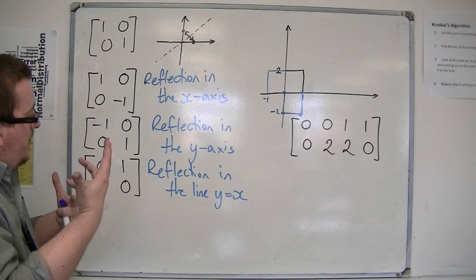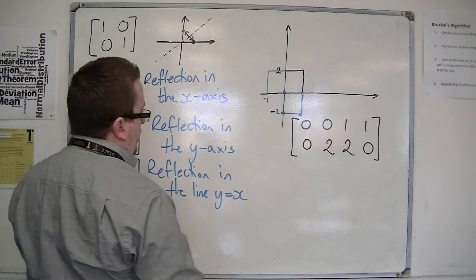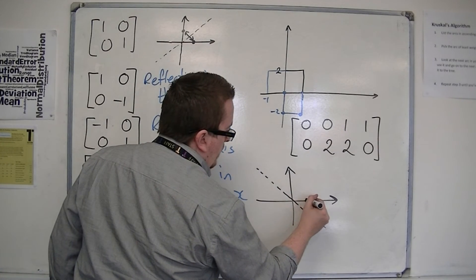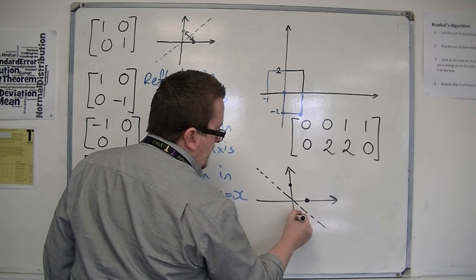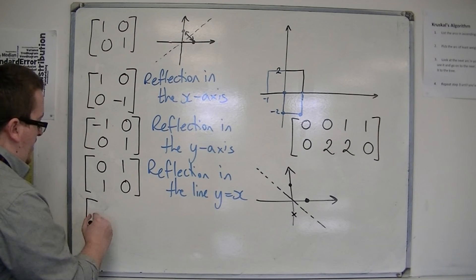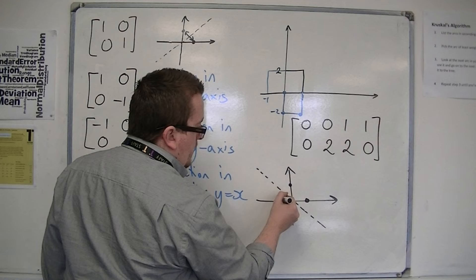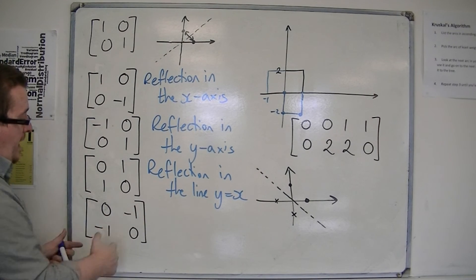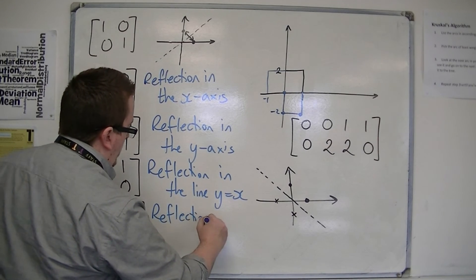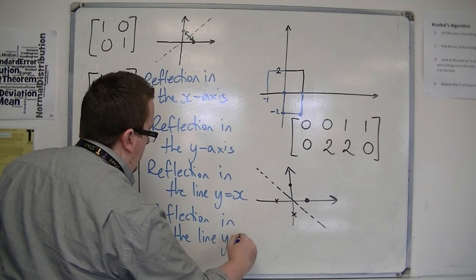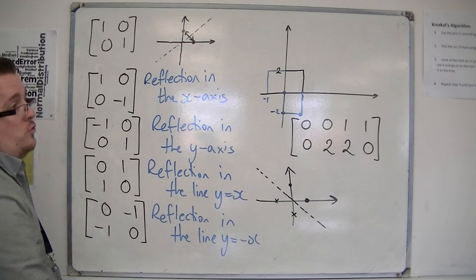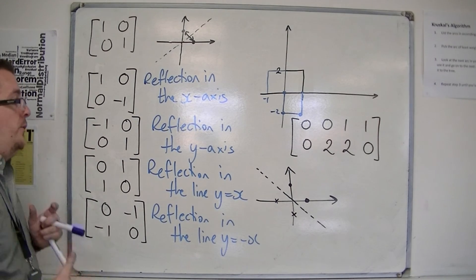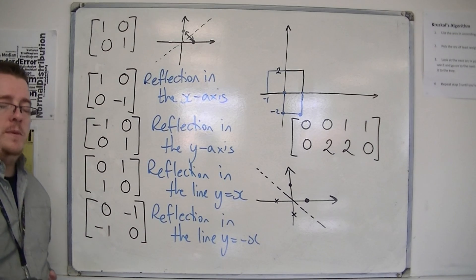I said that was last but not least, but I was forgetting y equals minus x. So if I want to do y equals minus x, my (1,0) would get reflected as (0, -1), and (0,1) would become (-1, 0). And so that is the matrix that would be a reflection in the line y equals minus x. You can use these little diagrams to help you determine what a matrix is doing. It's very effective, so make sure you have a play around with it and get used to how these things work.